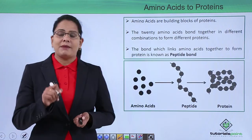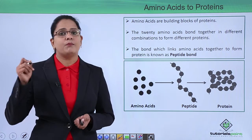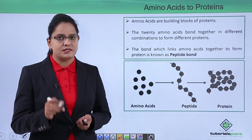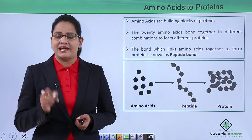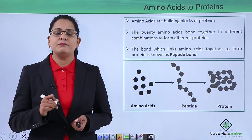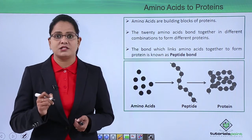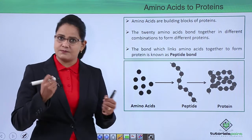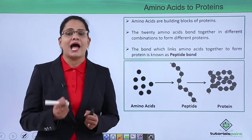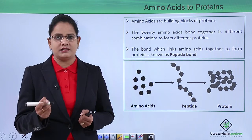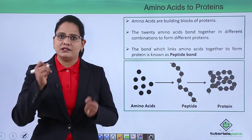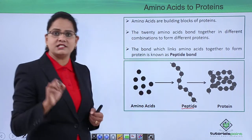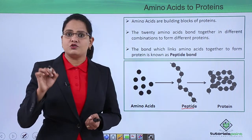So how do amino acids form proteins? Amino acids are the building blocks for proteins. There are 20 biologically important amino acids which form the proteins. These 20 amino acids undergo different types of combinations, join together, and ultimately form the protein. The bond between these amino acids is called the peptide bond, and this structure is described as a bead-on-a-string structure.